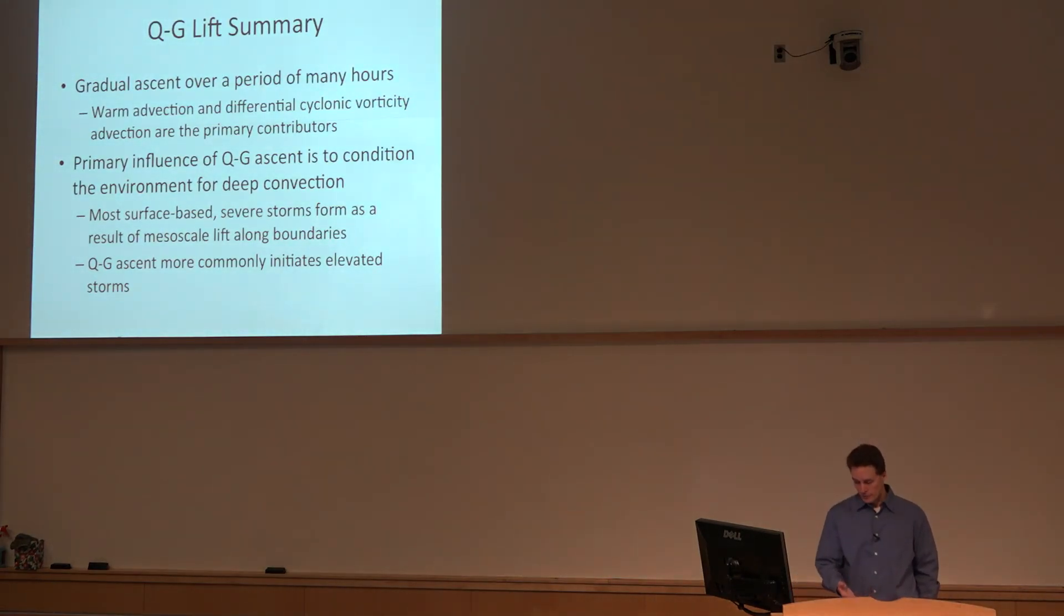So again, we'll just summarize QG. It was illustrated through the two cases. We get gradual ascent over many hours. Warm advection and differential cyclonic vorticity advection are the primary contributors, but they're often not occurring dramatically at the time and location of surface-based storms. You can see some influence occasionally where the environment is set up. You see the source of gradual ascent that moistens, deepens the moist layer, but primarily the storms, especially out in the Great Plains, most of what you'll see will be mesoscale and they are related to boundaries. And out here the elevated storms would be primarily located in the zones of stronger quasi-geostrophic ascent. But again, it varies from case to case, and you have to look at the details.